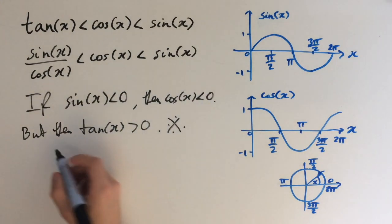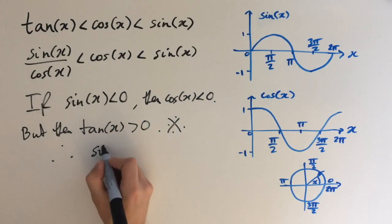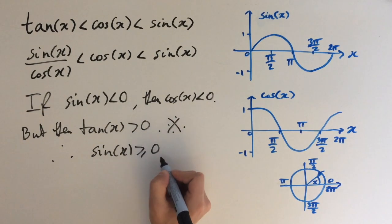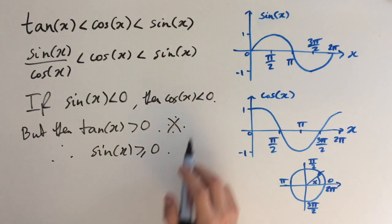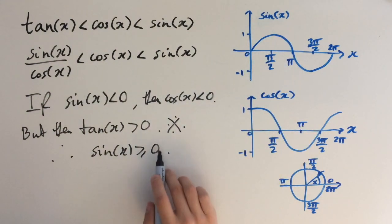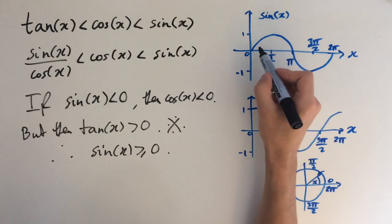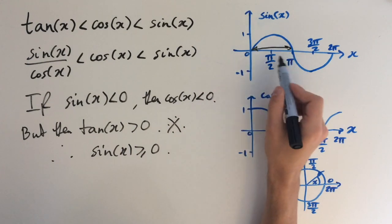Therefore sin(x) must be non-negative, i.e., greater than or equal to zero. Looking at our graph, sin(x) ≥ 0 corresponds to x being in the range between 0 and π. So x must be between 0 and π.